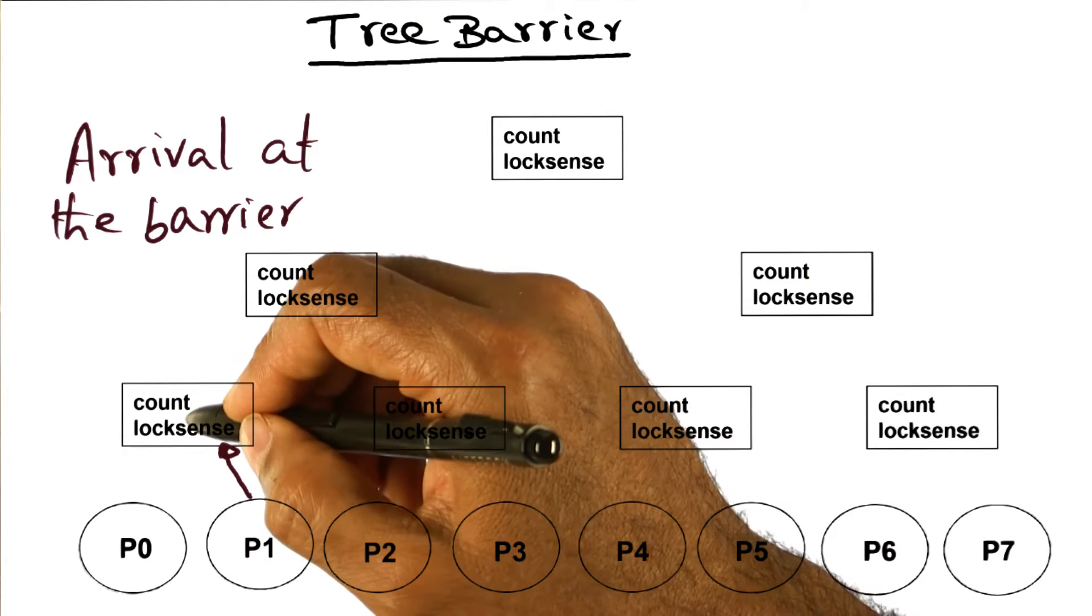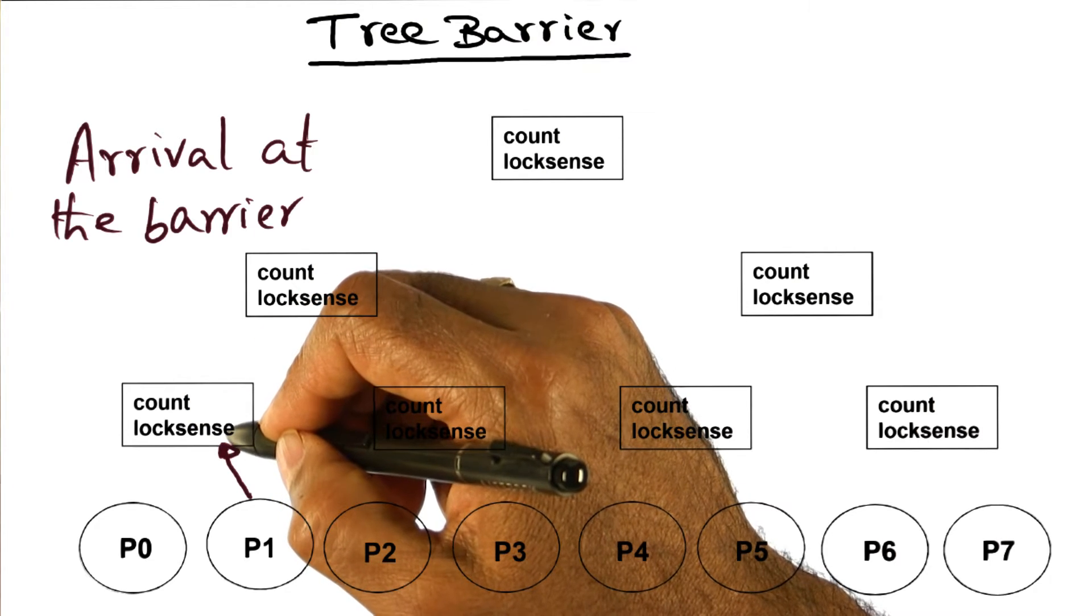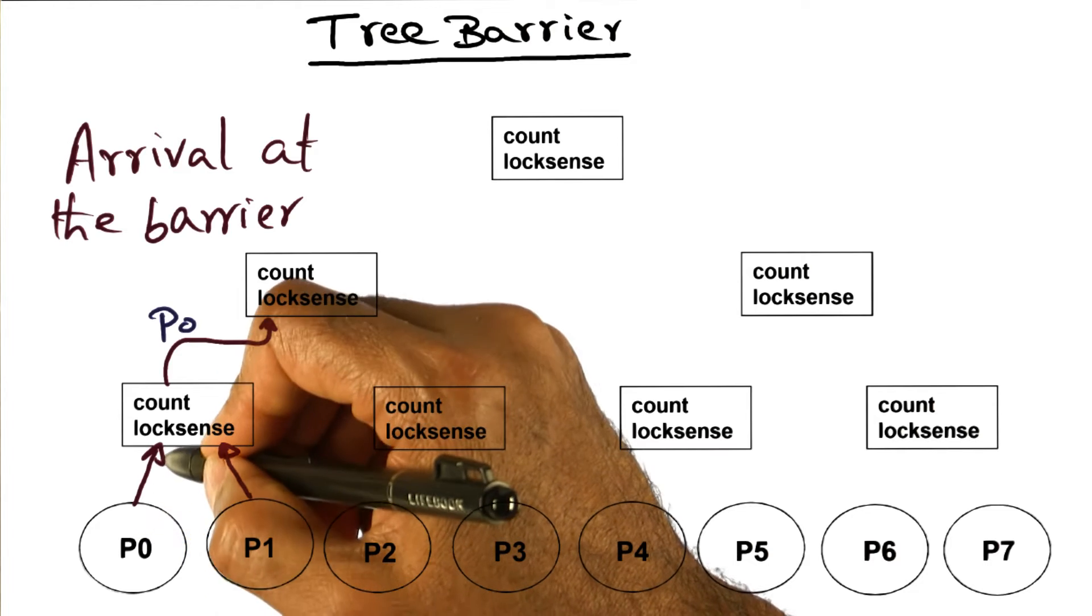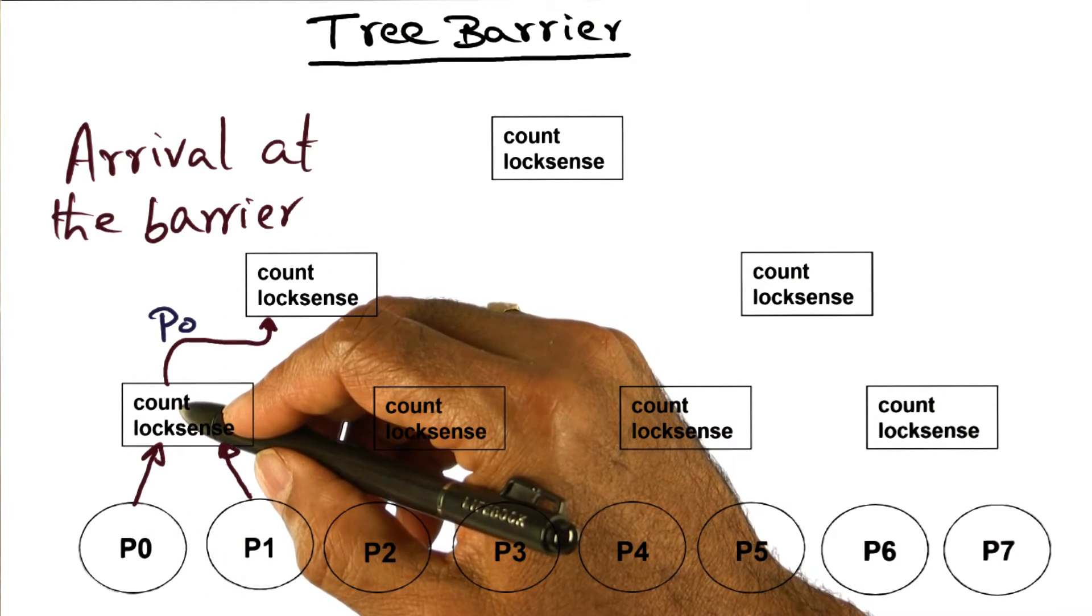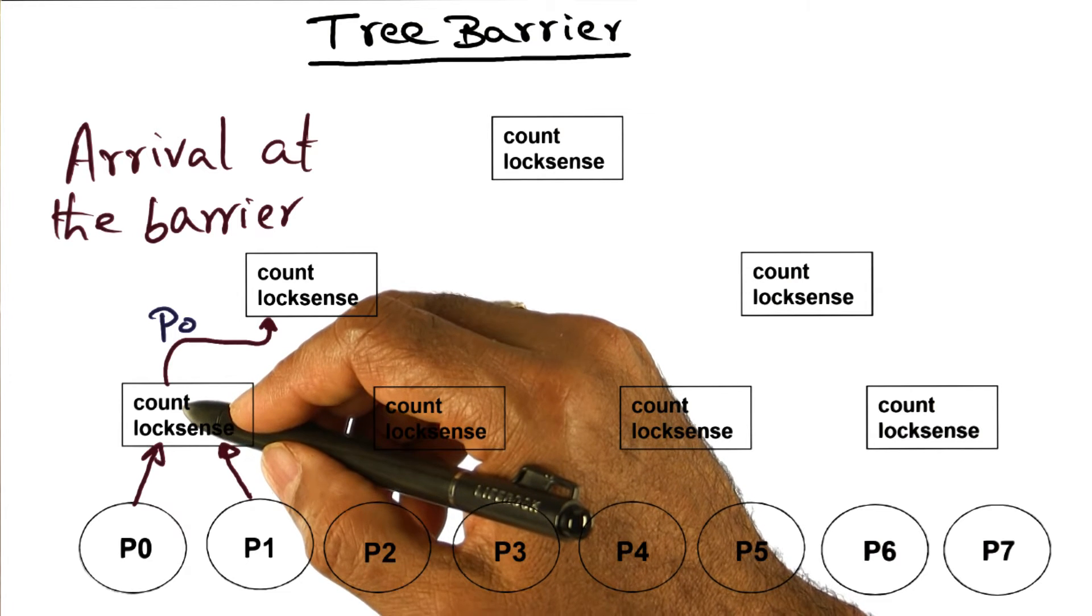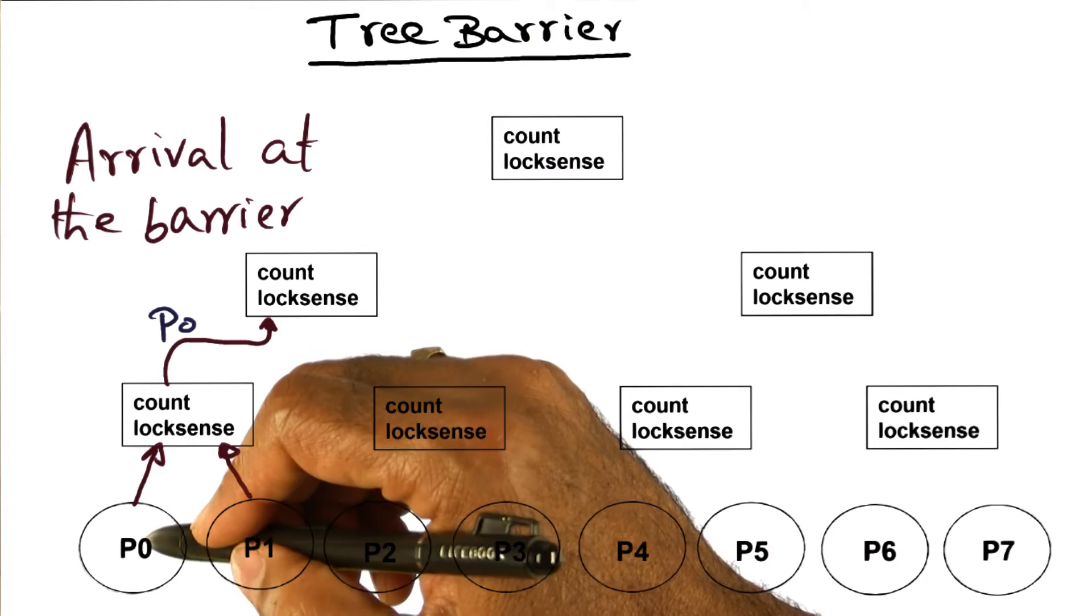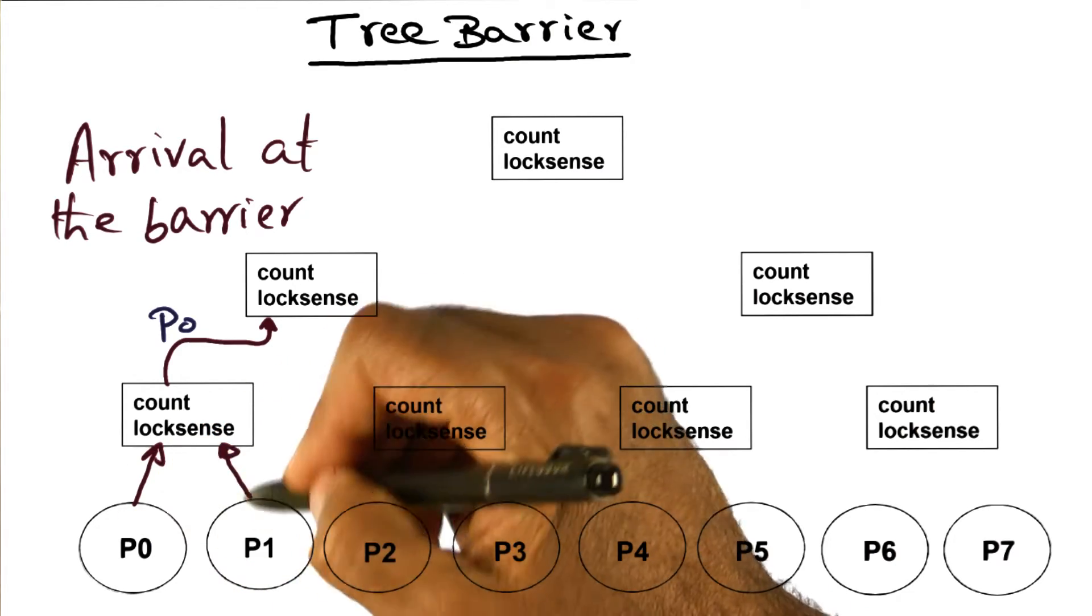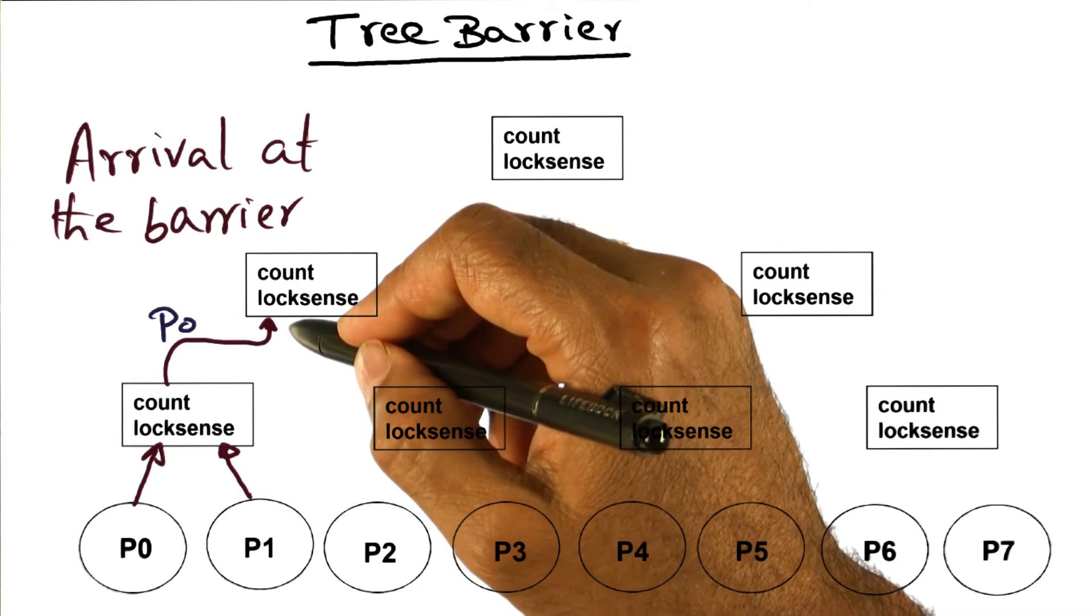Same thing is going to happen, that p1 comes here, decrements the count, and it waits for sense to reverse by spinning on this flag. Sometime later, p0 comes to the barrier and it decrements the count. Count goes to zero. But we're not done with the barrier yet, because the barrier is for all of the processes. So what p0 is going to say, okay, between the two of us, I know that we both have reached the barrier because the count is zero.